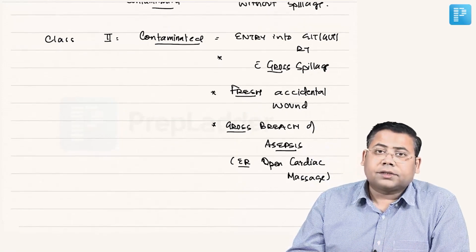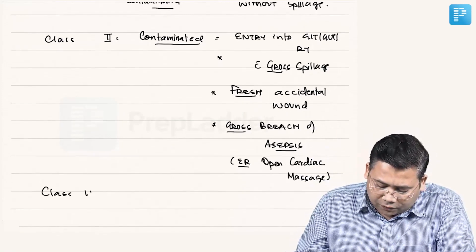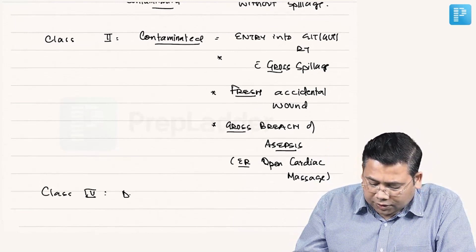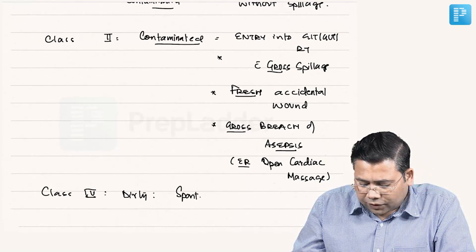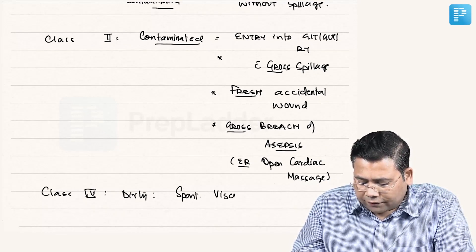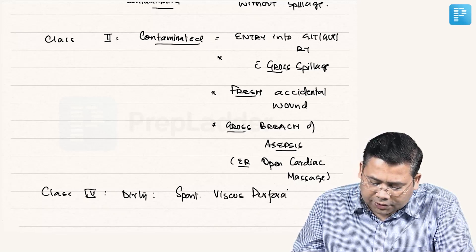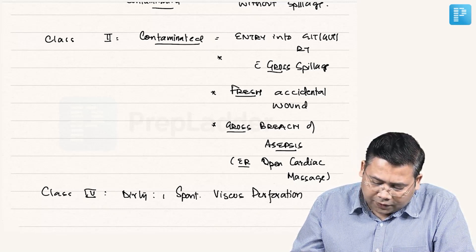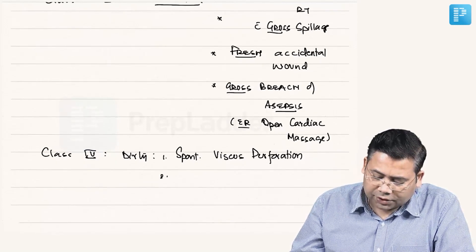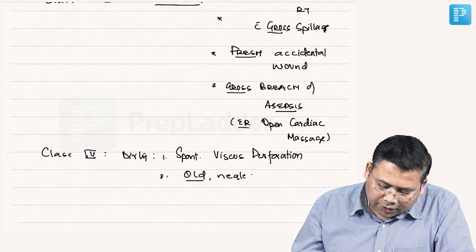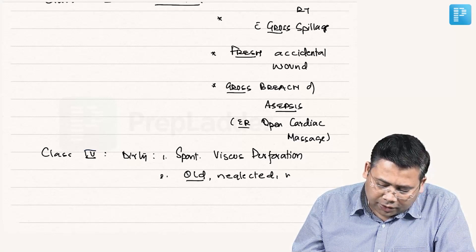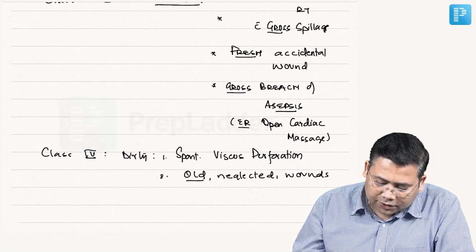This is what is a Class 3 wound. What is a Class 4 wounds? Class 4 wounds, they are dirty wounds. All the spontaneous viscous perforation, spontaneous viscous perforations come under this. The second thing is one is spontaneous viscous perforation. Second is old neglected contaminated wounds. So old neglected wounds, they are Class 4 wounds.